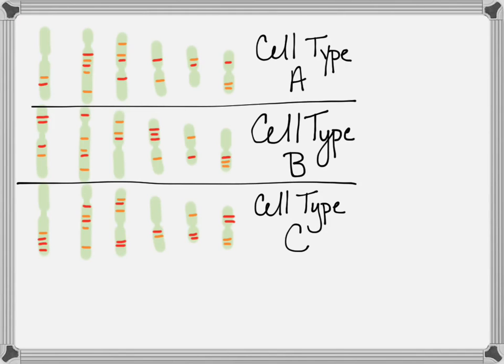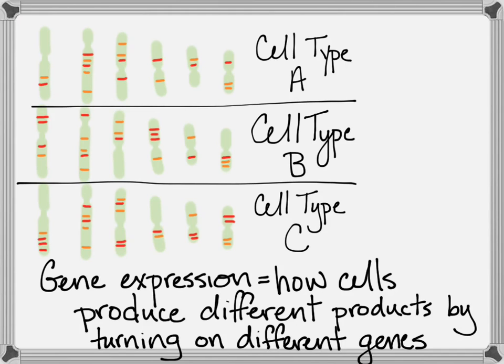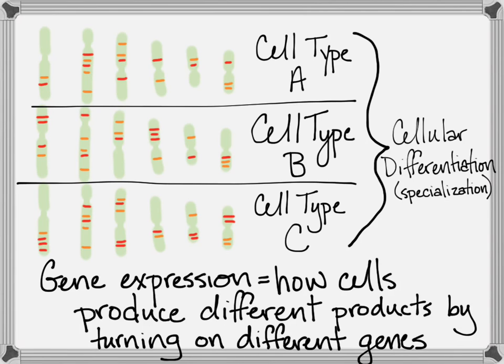That variation is called gene expression, and these cells will be examples of cells that have become different, or differentiated — they've specialized into different cell types.